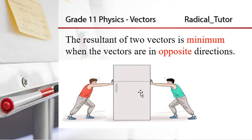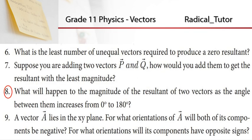vectors are in opposite directions. When the vectors are in opposite directions, the lines are in the same direction but the vectors are not the same, so it is normal. So let's look at that.